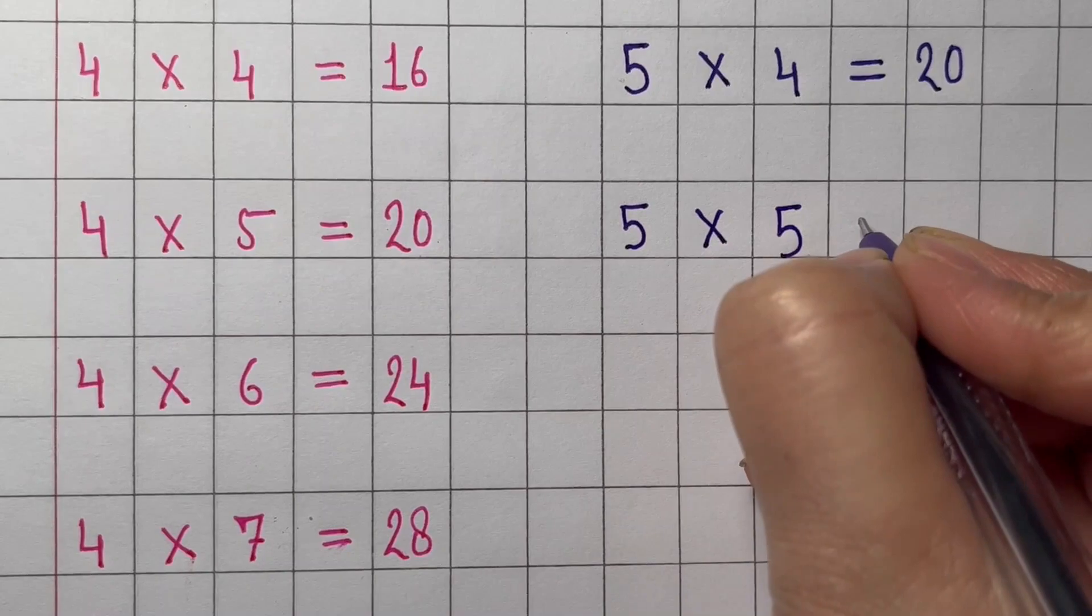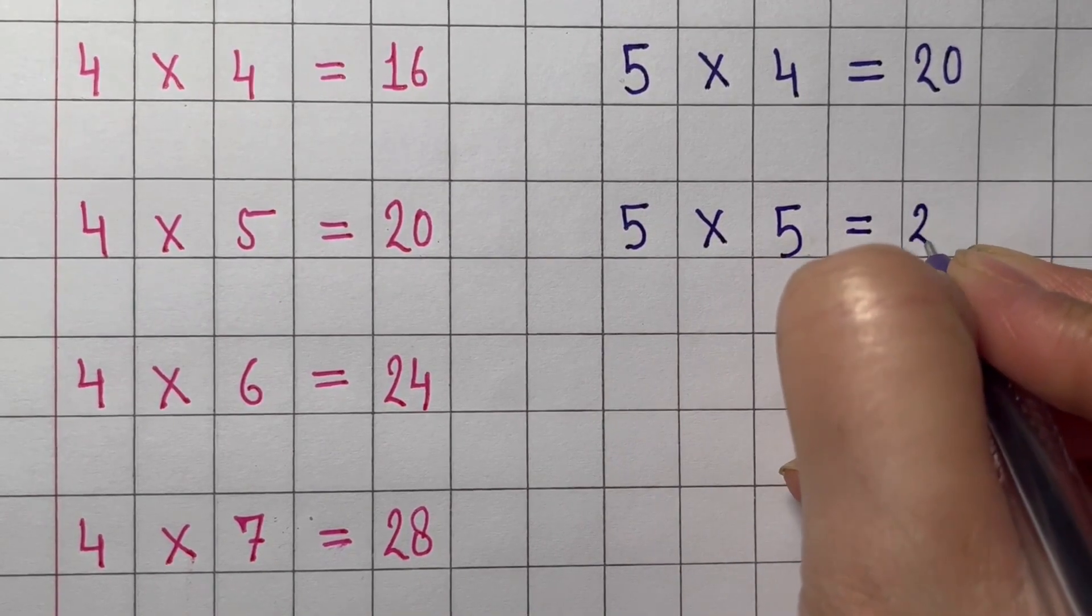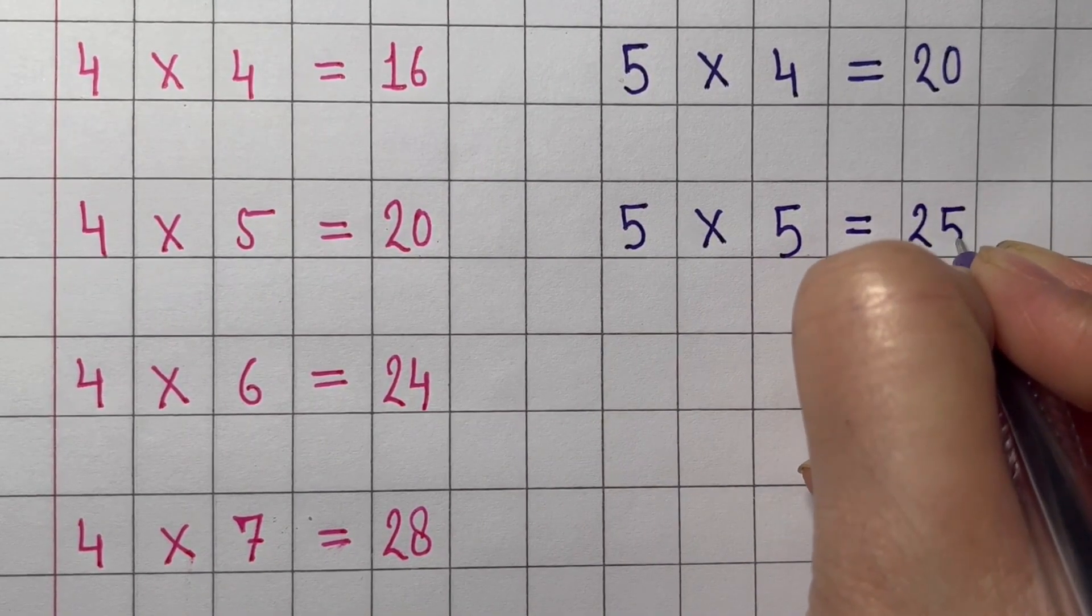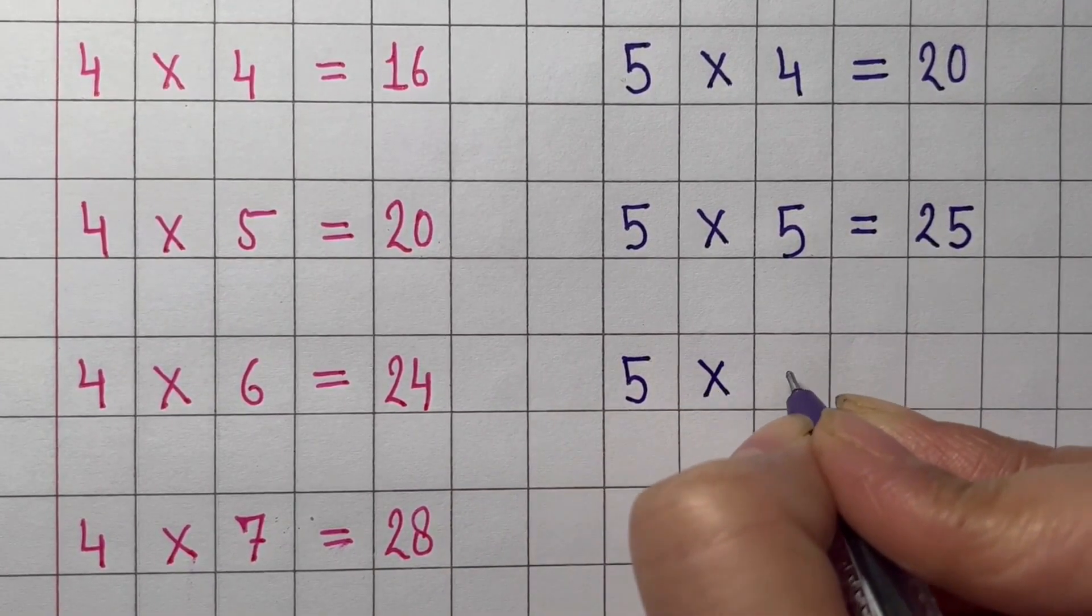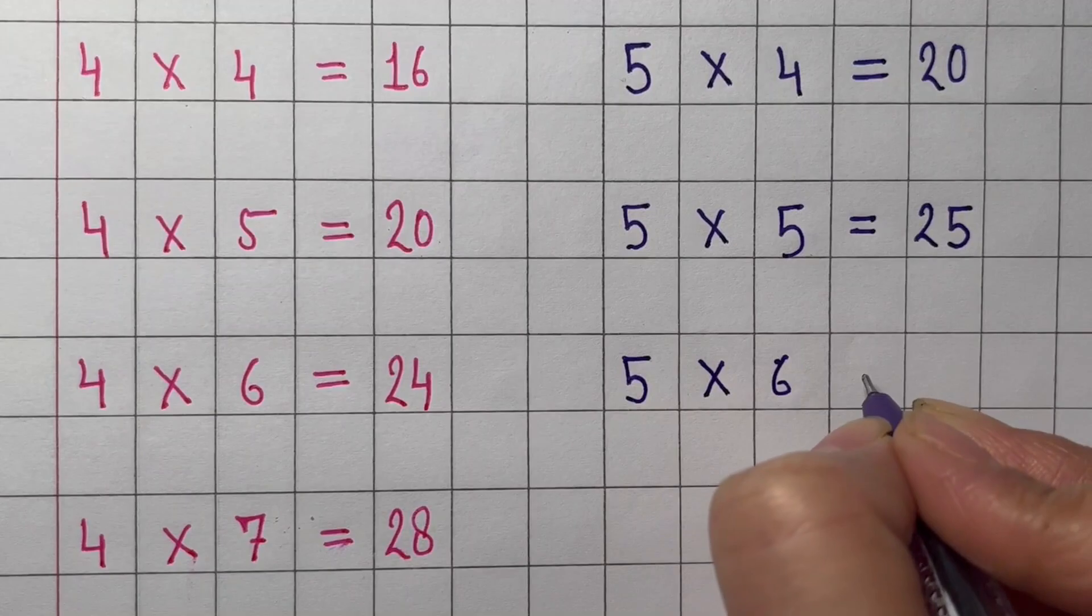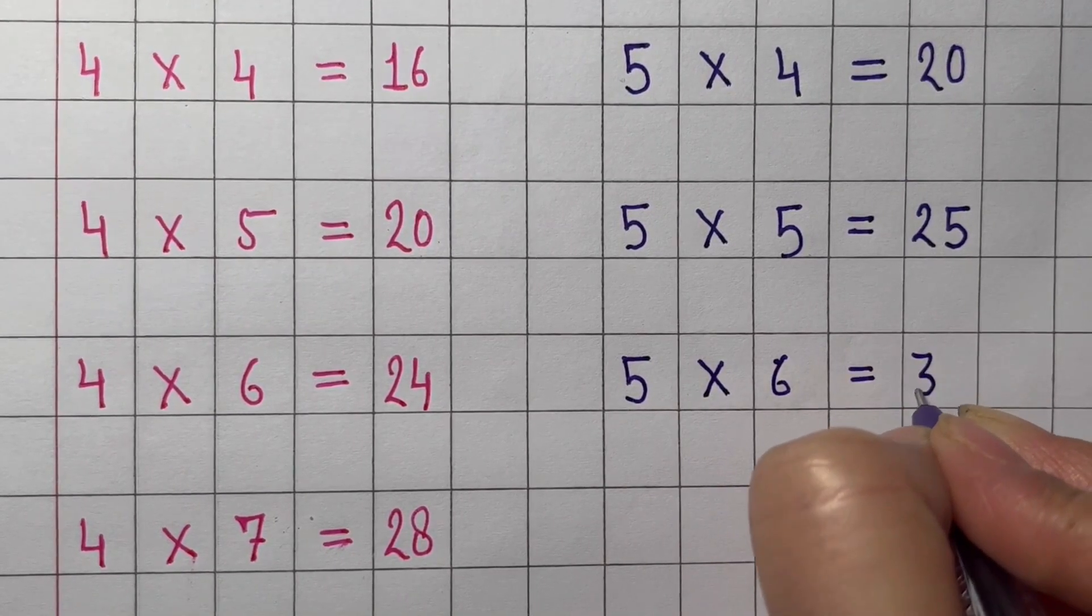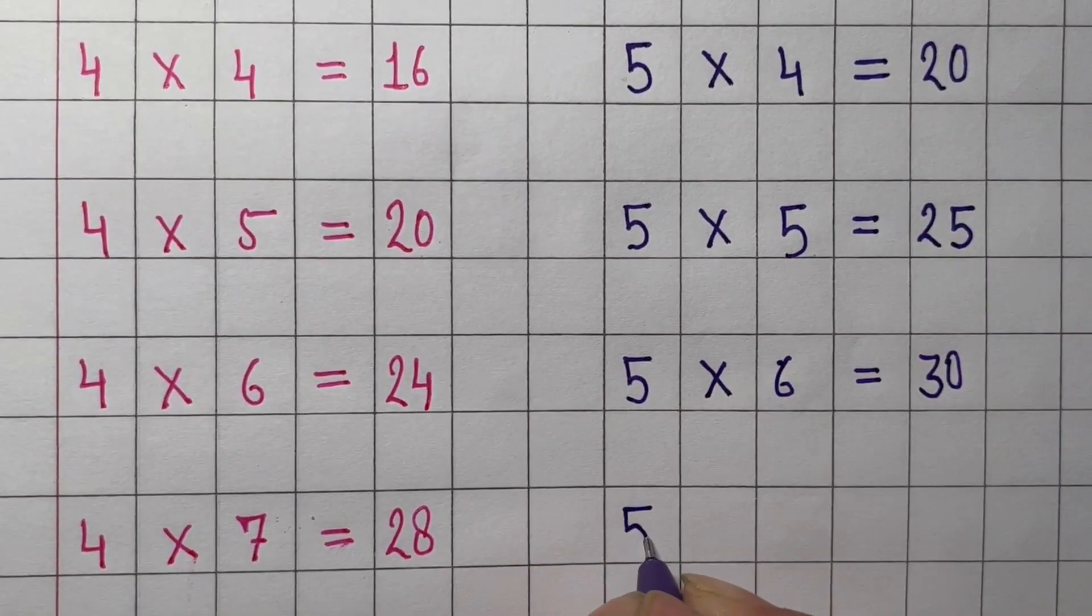Five times 5 equals 25. Five times 5 equals 25. Six times 5 equals 30.